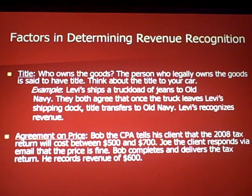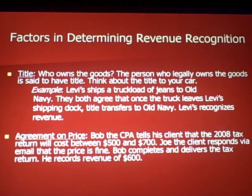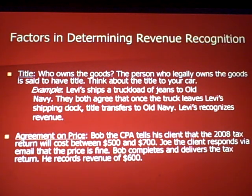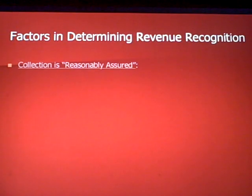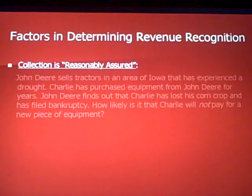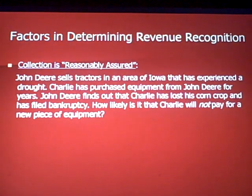Bob the CPA tells his client that the 2008 tax return will cost between $500 and $700. Joe the client responds via email that the price is fine — so there's been an agreement. Bob completes and delivers the tax return and records revenue of $600, because the client now owes him six hundred dollars — that's the final price they agreed on.